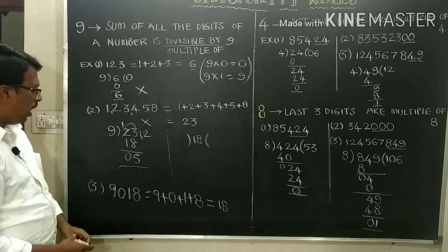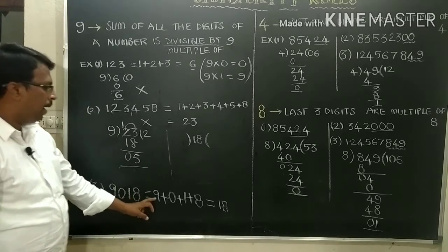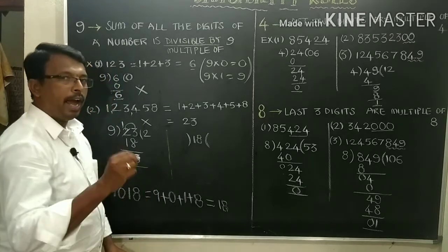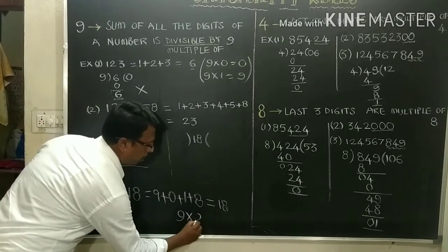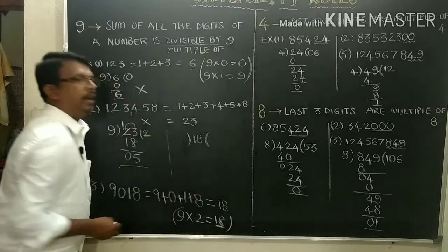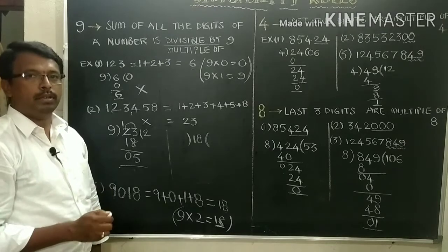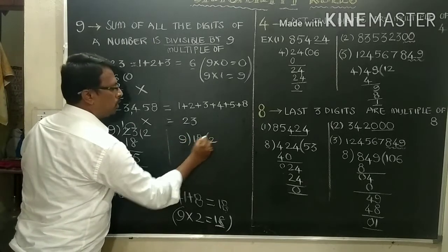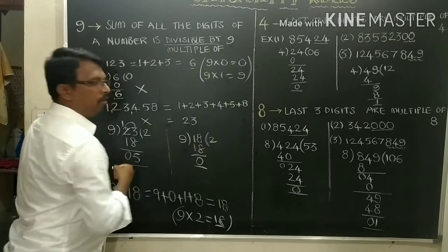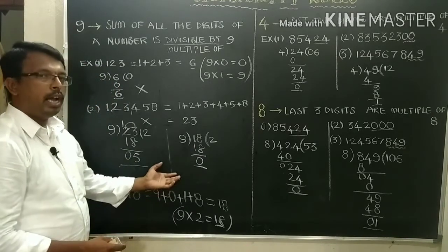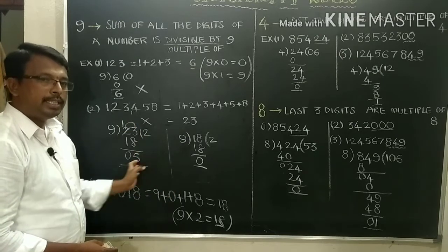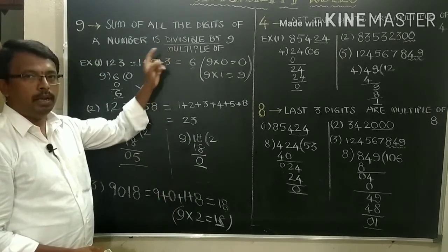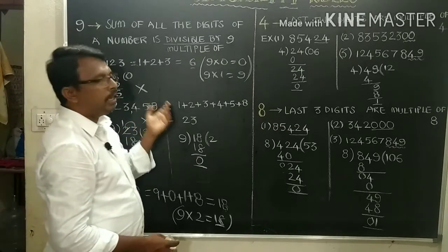Another number: 9018. 9 plus 0 plus 1 plus 8 gives 18. 18 is in the 9 times table, so we can say it is divisible by 9. And in another way, dividing 9018 by 9 we get 0 as remainder. This number 9018 is divisible by 9. The multiple method is a very easy method.